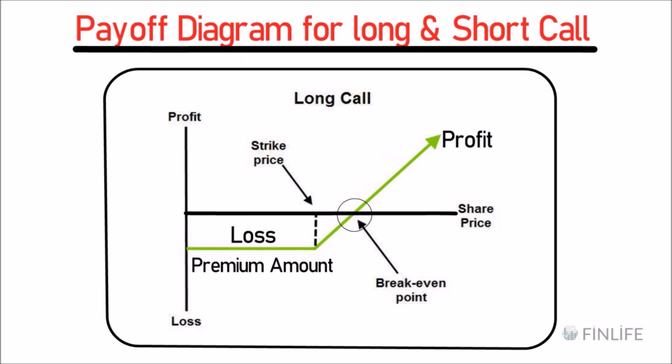If the share price goes above the breakeven point, the buyer starts making profit and more profit as the price rises. The maximum loss is just the premium paid. If the stock closes anywhere below the strike price, it's a complete loss of the premium. If it closes between the strike price and breakeven point, the gain above the strike price is subtracted from the premium to give the net loss.